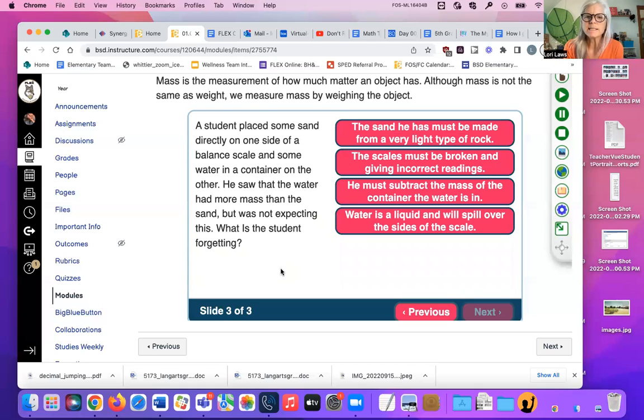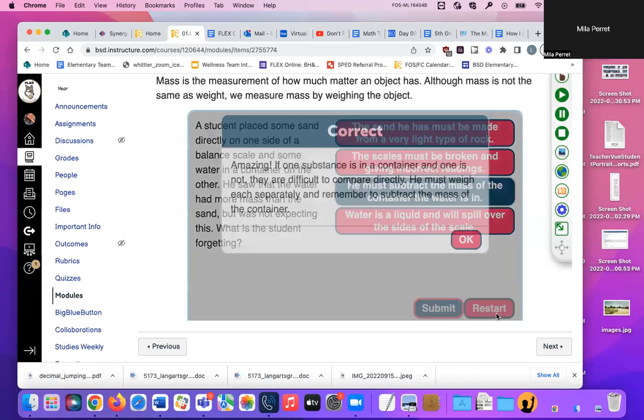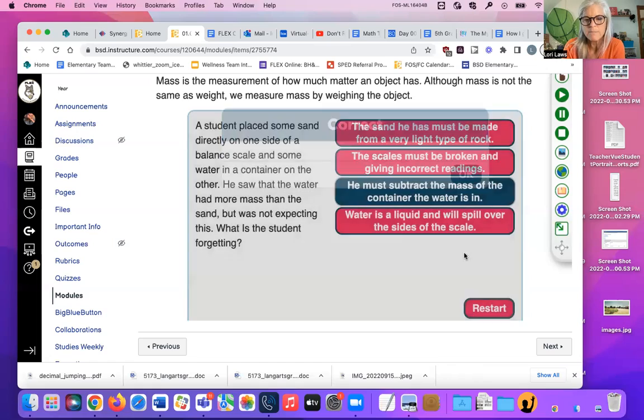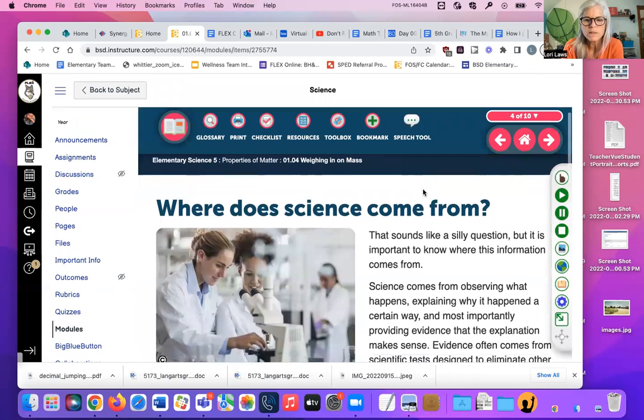Finally, a student placed some sand directly on one side of a balance and some water in another. He saw that the water had more mass than the sand but was not expecting this. What is the student forgetting? He must subtract the mass of the container the water is in. Let's see. Amazing. If one substance is in a container and one is not, they're difficult to compare. You must weigh each separately and remember to subtract the mass of the container. Nice work, you guys.